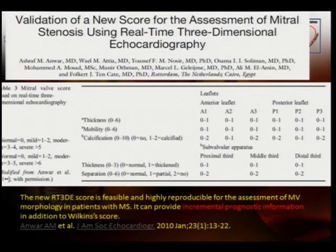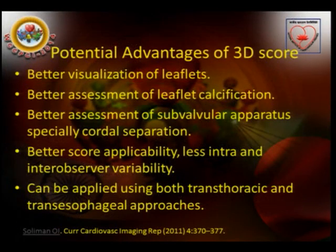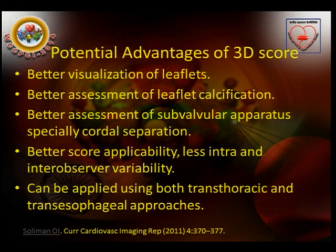A new score for assessment of mitral stenosis using real-time 3D echocardiography was published in the Journal of American Society of Echocardiography in 2010. The parameters include both the anterior and posterior leaflets with three scallops each, evaluating thickness, mobility, and calcifications. For the sub-valvular apparatus, thickness and separation are the parameters, with the proximal third, middle third, and distal third evaluated. This 3D score is feasible and highly reproducible for assessment of mitral valve morphology in patients with mitral stenosis. It can provide incremental prognostic information in addition to the Wilkins score. Potential advantages include better visualization of leaflets, better score applicability, and it can be applied using both transthoracic and transesophageal approaches.